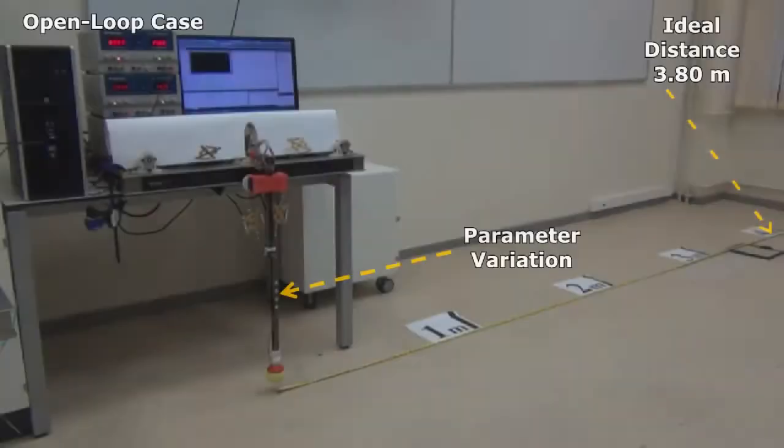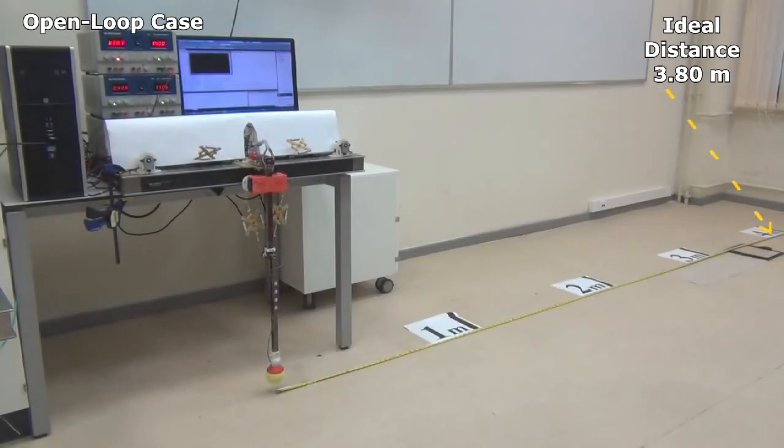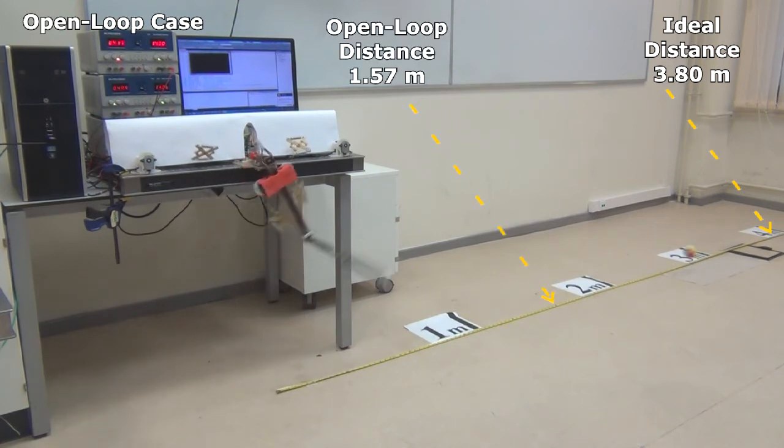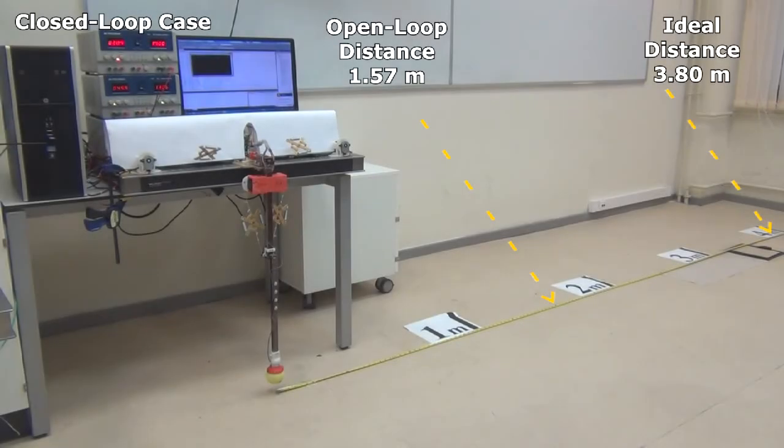Throwing experiments were also conducted under parameter uncertainty. Additional mass, which is not taken into account for control system development, is added to the second link. In this case, the open-loop distance is 1.57 meters, whereas the closed-loop distance is 2.71 meters.